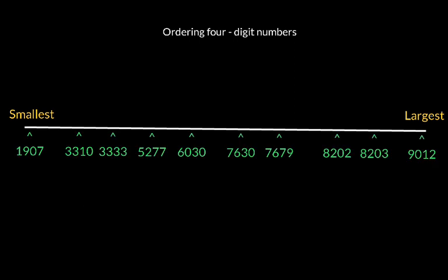As you can see, I've placed all the numbers in the correct order. We've got 1907, which is the smallest of the set of numbers, then we have 3310, followed by 3333, then 5277, 6030, 7630, 7679, 8202, 8203, and finally 9012.